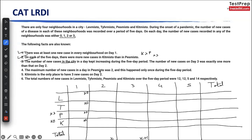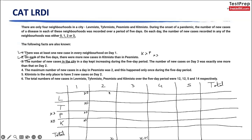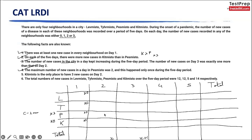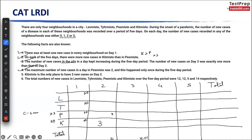The maximum number of cases in a day in P was 2 — which is obvious since we already deduced P cannot be 3 — and it happened only once during the five-day period. K is the only place to have 3 new cases on day 2, meaning L, T, and P do not have 3 on day 2. The total number of cases for L, T, P, K over the five days were 12, 12, 5, and 14 respectively — giving a grand total of 43.